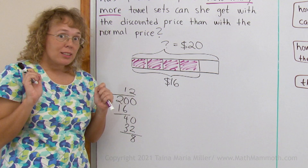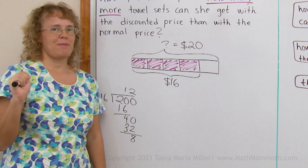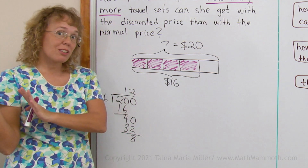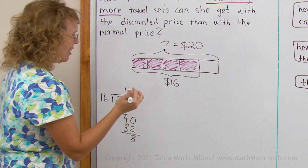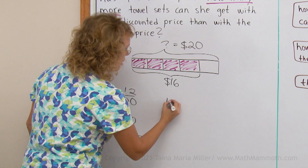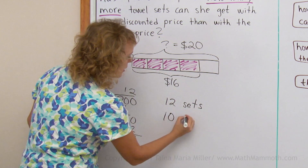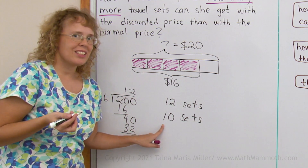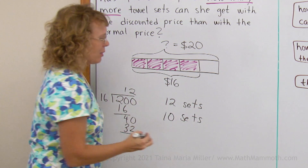And now with the normal price, which was $20 (or almost $20), how many can she get with $200? That's easy — she can get 10 sets. So with the discounted price she can get 12 sets, and with the normal price she can get 10 sets. We can see easily that the difference is 2 sets — she can get 2 more sets with the discounted price.